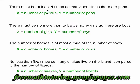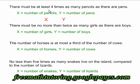Let's look at the first example. There must be at least four times as many pencils as there are pens. In this case I've defined x as the number of pencils and y as the number of pens. I place my x and my y and I have to put the inequality symbol in between them. Will it be a less than or equal to sign or greater than or equal to sign? In this case we see the words 'at least.' At least indicates a greater than or equal to symbol.